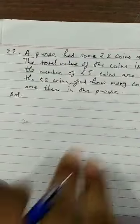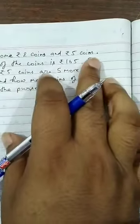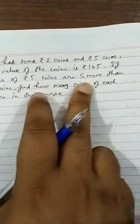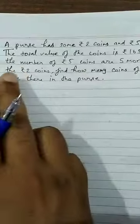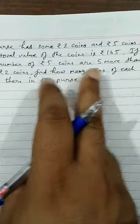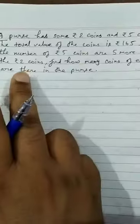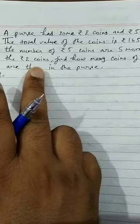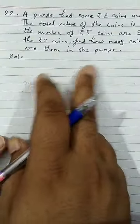Now we have next question. A purse has some 2 rupee coins and 5 rupee coins. The total value of coins is 165. If the number of 5 rupee coins are 5 more than the 2 rupee coins, how many coins of each are there in the purse?